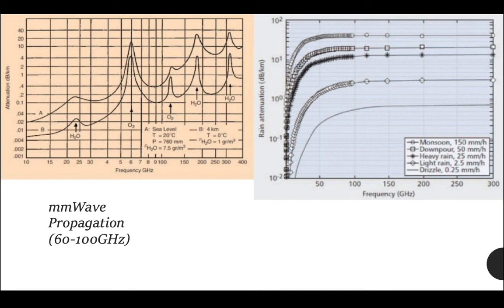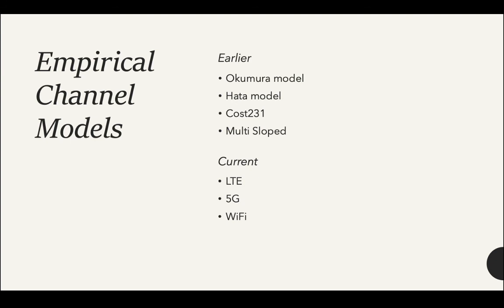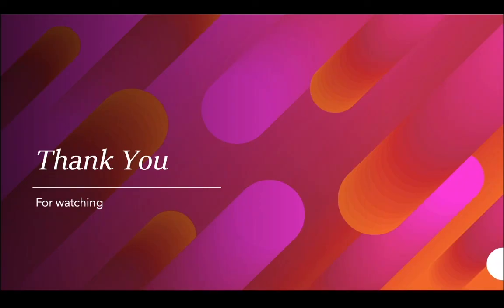To tackle this issue, we use empirical channel models. In areas not suitable for millimeter wave, existing channel modeling cannot be used. Early cellular empirical models are based on extensive measurement. Examples are Okumura model, Hata model, Cost 231 model, and multi-slope model. However, the empirical model is dependent on its location. The current empirical models consist of LTE, 5G, and Wi-Fi, with 5G models including higher frequency up to 100 gigahertz. That is all for the summary of this video, and thank you for watching.